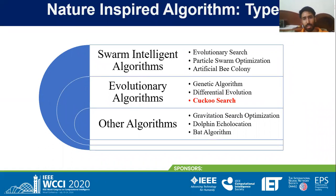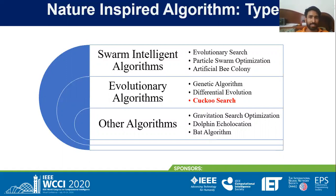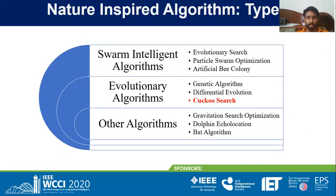Swarm intelligent algorithms are based on the swarming behavior of species working in collaboration. Evolutionary algorithms include the Genetic Algorithm, Differential Evolution, and the Cuckoo Search, which adapt themselves to the situation. Cuckoos are very intelligent — they copy the behavior of crows, lay their eggs in the crow's nest, and when these eggs hatch, the cuckoo chicks throw the other eggs out of the nest, getting the whole share of food for themselves, undetected by the crows. Other algorithms include Gravitational Search Optimization, the Dolphin Echolocation algorithm, the Bat algorithm, and various others.